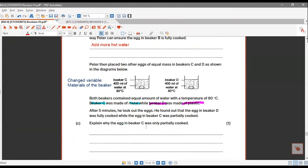On the other hand, when you put the hot water in a plastic cup, plastic is a poor conductor of heat. So the heat loss from the hot water to the plastic beaker is actually much slower. So the hot water will still remain hot to allow the egg to be cooked completely.